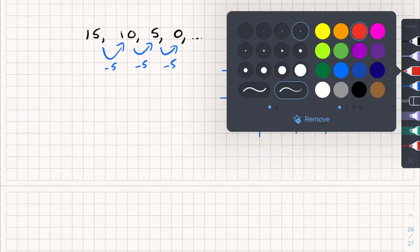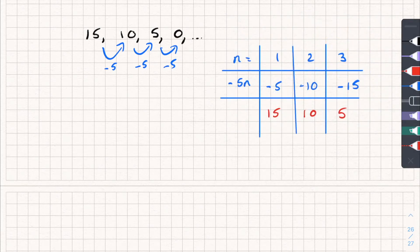So to get from negative 5 to positive 15, I need to add on 20. So plus 20. To get from negative 10 to positive 10, I need to add 20. And to get from negative 15 to 5, I need to add 20. So my nth term rule for this sequence is going to be negative 5n plus 20.